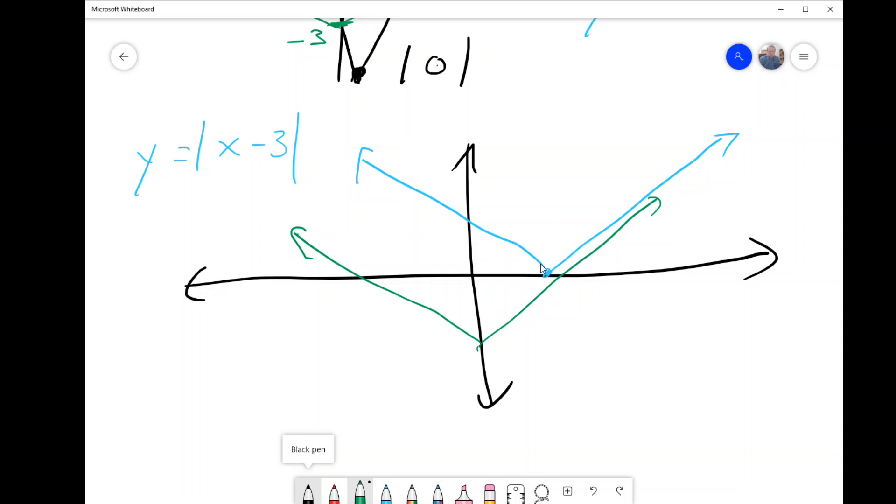Absolute values are the only functions that you're probably ever going to see, aside from some piecewise defined functions, which have these sharp turns in them at any point.